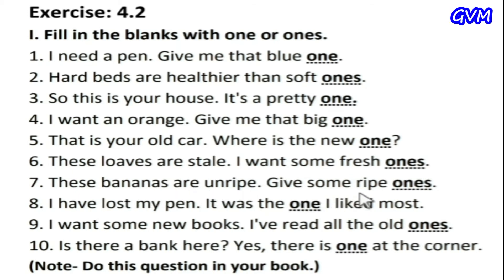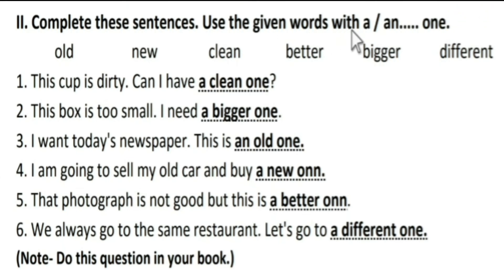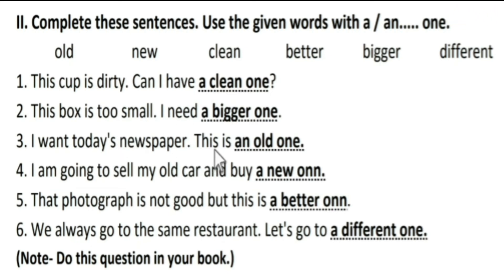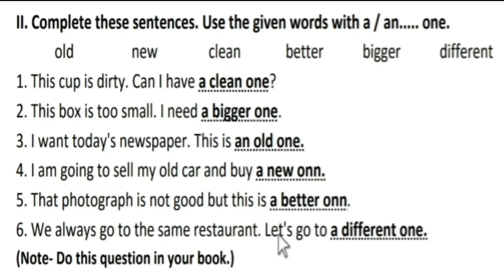'These bananas are unripe, give me some ripe ones' — we use 'ones' because 'bananas' is plural. 'I have lost my pen, it was the one I liked most.' 'I want some new books, I have read all the old ones.' 'Is there a bank here? Yes, there is one at the corner.' Do this question in your book. Next exercise: complete the sentence using the given words with 'a' and 'one'. 'This cup is dirty, can I have a clean one?' 'This book is too small, I need a bigger one.' 'I want today's newspaper, this is an old one.' 'I'm going to sell my old car and buy a new one.' 'That photograph is not good, but this is a better one.' 'We always go to the same restaurant, let's go to a different one.'